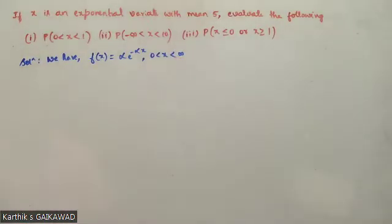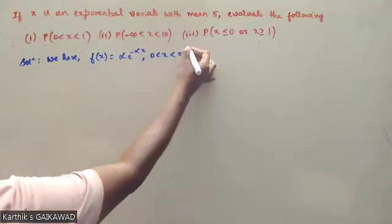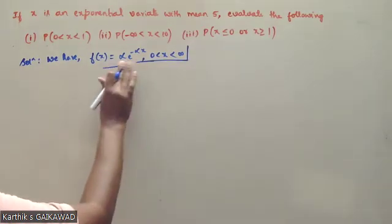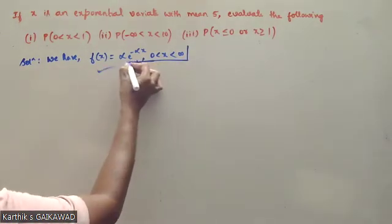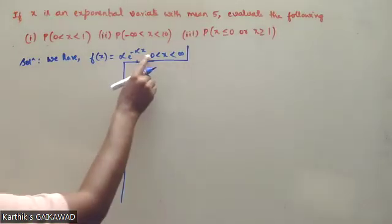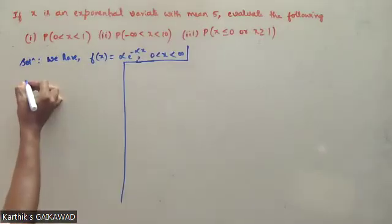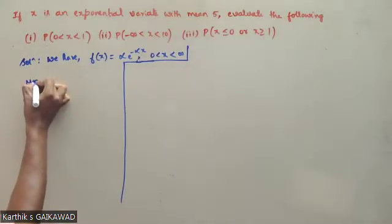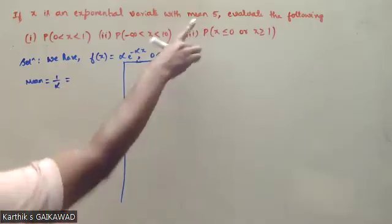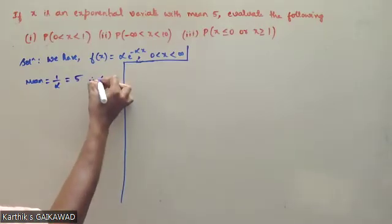Now, if mean is 5, the mean is equal to 1 by alpha. Since mean is 5, therefore alpha is 1 by 5.